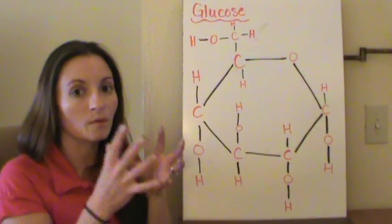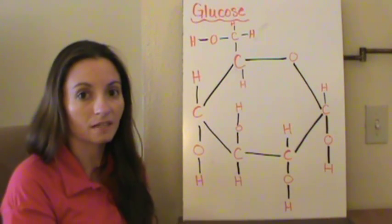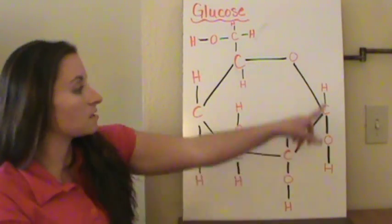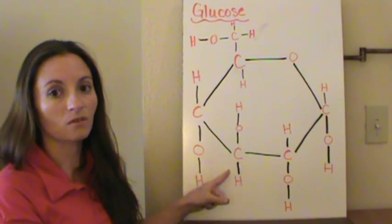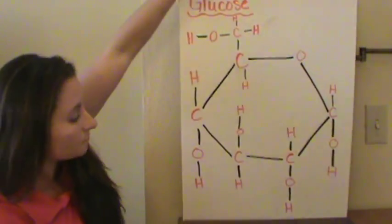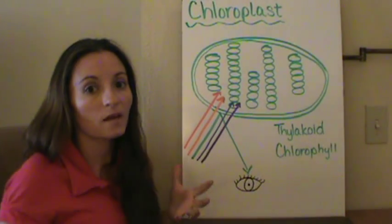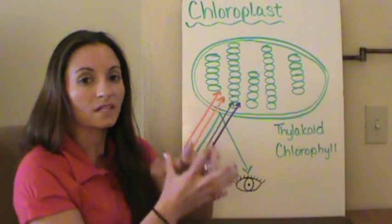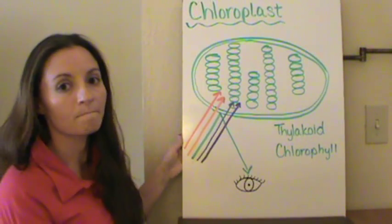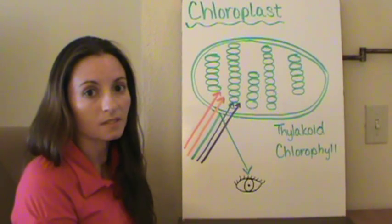Later we'll talk about the fact that when we break those bonds, it actually releases the energy and we can use it. So the energy from the sun gets stored within these glucose molecules — stored in the bonds of the glucose molecules. Now let's take a look at where this happens within the cell and what actually happens with the energy that we use. It happens within the chloroplast of the cell.